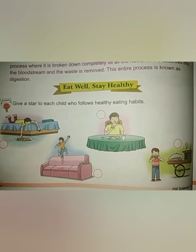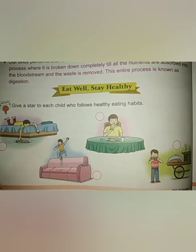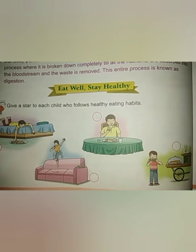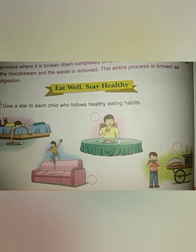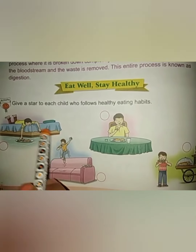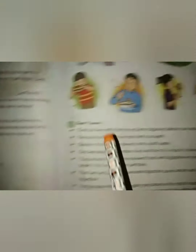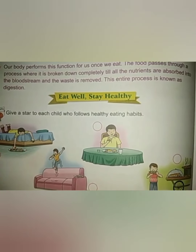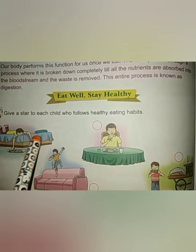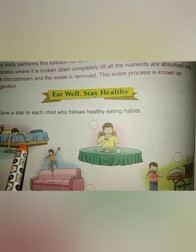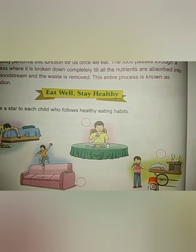Open page number 72. There is one activity you need to complete. Give a star to each child who follows a healthy eating habit. In the book they have given some images on pages 72 and 73. You need to look at the pictures and if they are following healthy eating habits, then give them a star. Complete this activity and send it. Thank you.